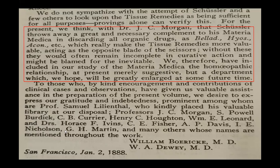He commented on these biochemical tissue remedies and said that without them it might be a little bit incomplete. So this is very important to understand — how many people have worked with him. There were JC Morgan, S. Powell, Burdick, CP Courrier, Henry Horton, Leonard, Dr. Horace Ivins, CE Fisher, Davies, Nicholson, Martin, and a number of people who worked out with this. That's why it has its own importance. It is not only Schussler who was saying — he had critics earlier, but a number of people followed him later on.